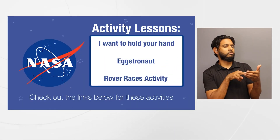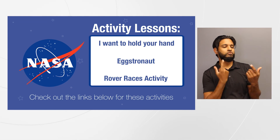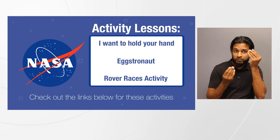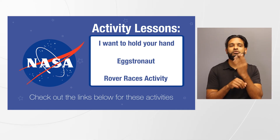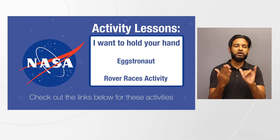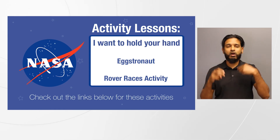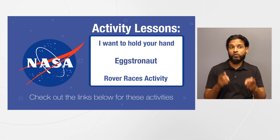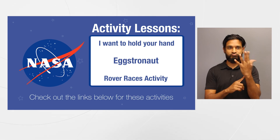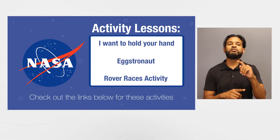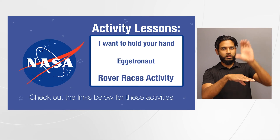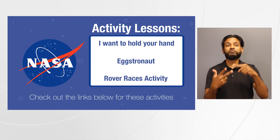In order to give students a more robust experience, we recommend leading this activity in sequence with other related lessons. For example, start with I Want to Hold Your Hand, where your students will build a robotic hand, followed by Eggstronaut, where your students will land on Mars. Then have your students complete this activity, where they will explore Mars and gather samples.